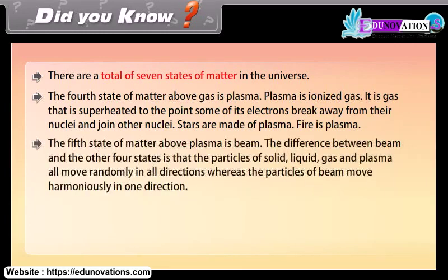The fifth state of matter above plasma is beam. The difference between beam and the other four states is that the particles of solid, liquid, gas and plasma all move randomly in all directions, whereas the particles of beam move harmoniously in one direction.